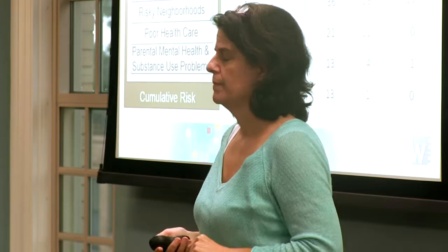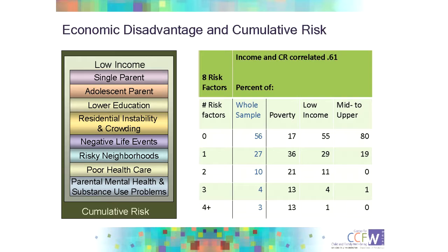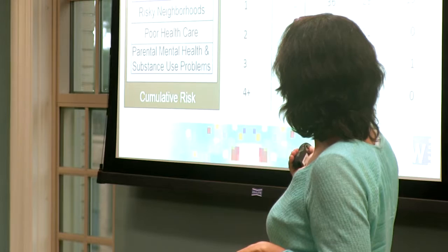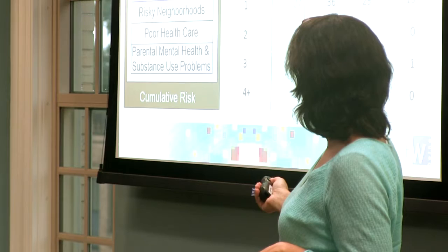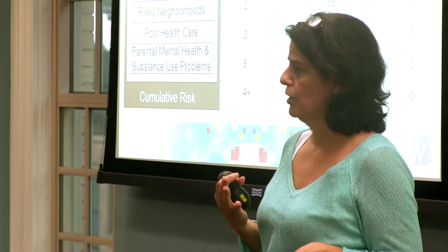These are data from a study I'll describe in a minute, used here to illustrate that idea. We looked at 300 families in the King County area of Washington, and found the correlation of the full range of income to cumulative risk is about .61 — pretty substantial, showing that lower income is related to higher risk. When we divide by income categories, families at or above median income overwhelmingly have zero or at most one risk factor, whereas families in poverty most often have one, two, or more risk factors. So poverty is a marker not just for low income itself, but for an accumulation of other risk factors.